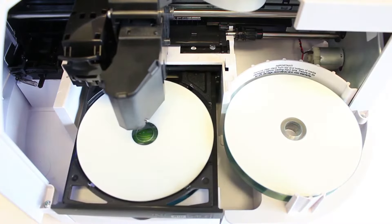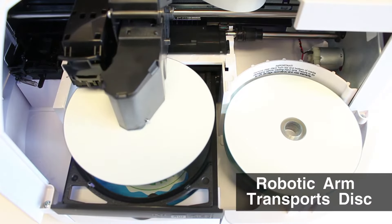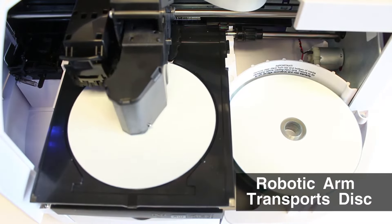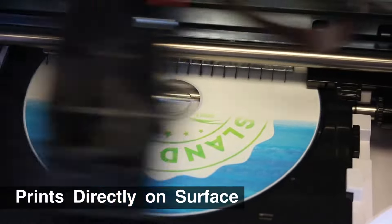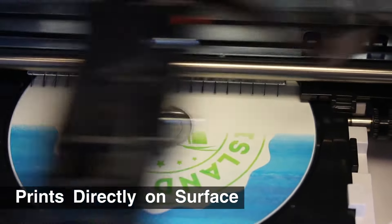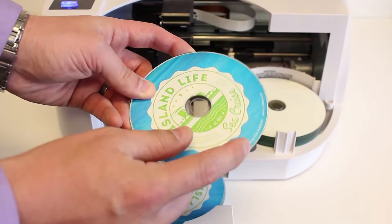Once you hit go, the disc is burned, and then the built-in robotic arm transports the disc onto the printer tray. The Bravo SE3 prints directly onto the surface of the disc with vibrant, high-resolution color inkjet printing.